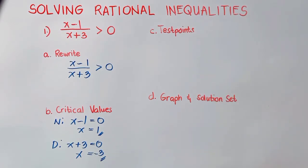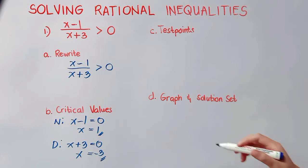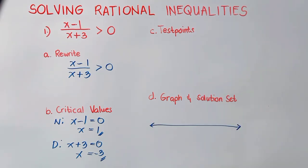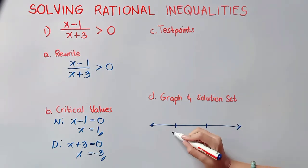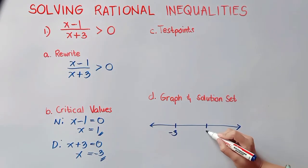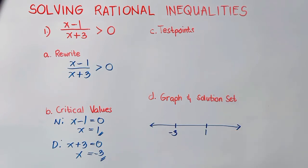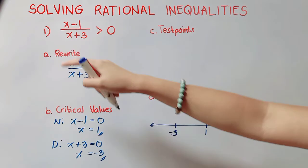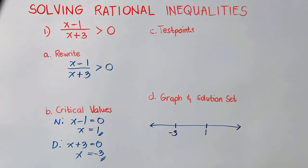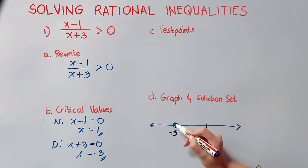These values are what we will use for our graph. Our graph for inequalities is a line graph, going from negative numbers to positive numbers, like the x-axis of a Cartesian plane. Our first value, negative 3, will make our denominator 0, which is undefined. Therefore, negative 3 is not part of the solution, so we will use a hollow point.